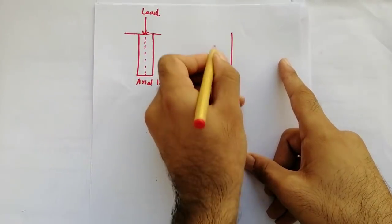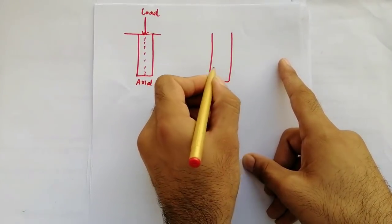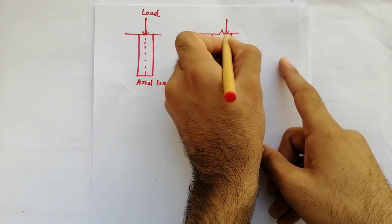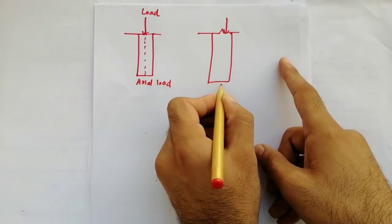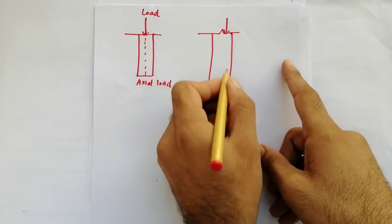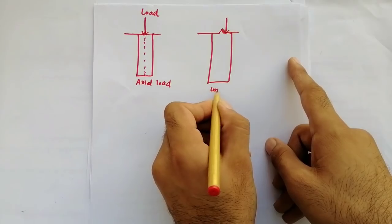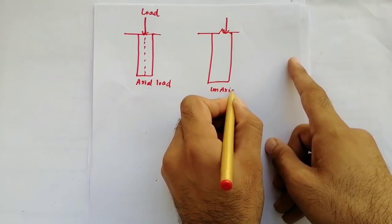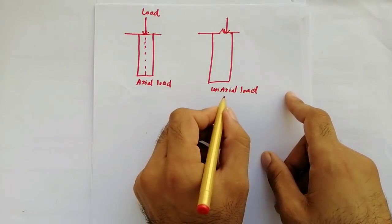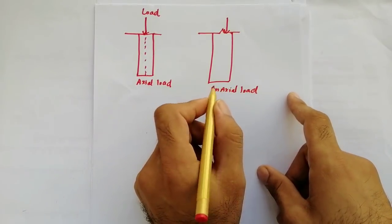And this is another column. When the load is not coming on the center, without the center, when the load is applied anywhere on the column, it is called uniaxial. So we design a column for axial and also for uniaxial load or moments.